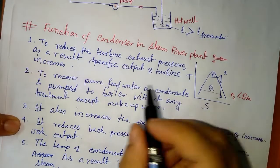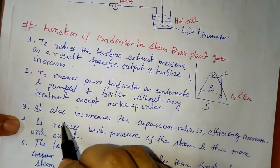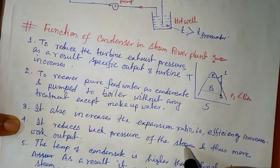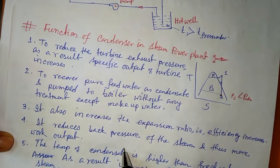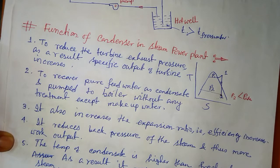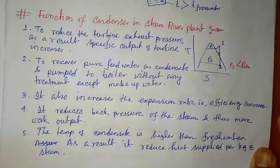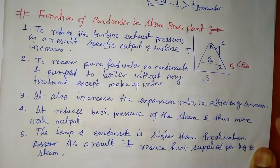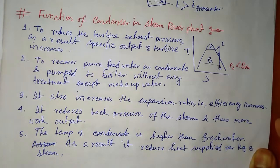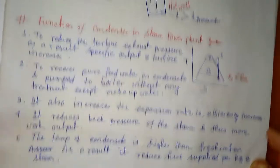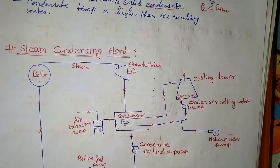So these are the functions of the steam condenser: it reduces turbine exhaust pressure increasing work output, it recovers pure feed water, it increases the expansion ratio thereby increasing efficiency, it reduces back pressure of the steam, and the temperature of the condensate being higher than fresh water reduces heat supplied per kg of steam. Next lecture we will discuss the different types of condensers.